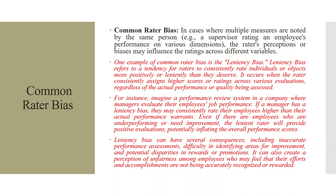In cases where multiple measures are rated by the same person — for example, a supervisor rating an employee's performance on various dimensions — the rater's perception or biases may influence the ratings across different variables. One example of common rater bias is leniency bias, which refers to the tendency for raters to consistently rate individuals or objects more positively or leniently than they deserve.